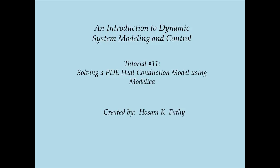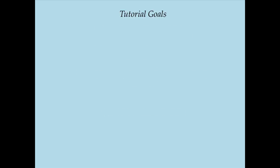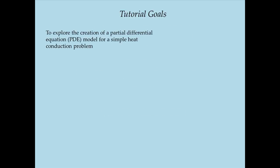We have three goals for this tutorial. So far we've been building lumped parameter models of dynamic systems. The expression 'lumped parameter' refers to the fact that we have a finite number of state variables representing any dynamic system we're trying to model. In this tutorial, I'm going to explore the modeling of systems with an infinite number of state variables, which are called distributed parameter systems.